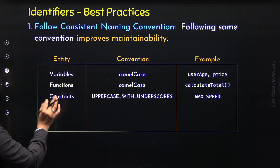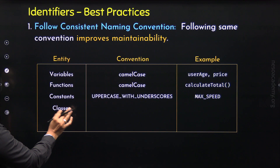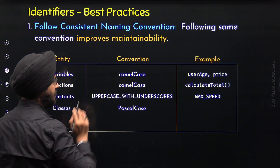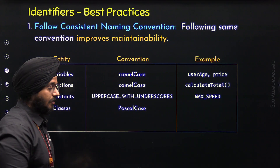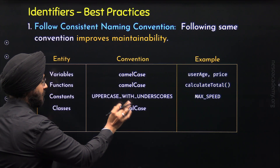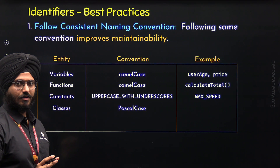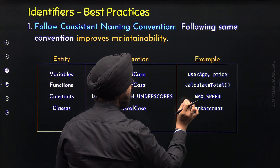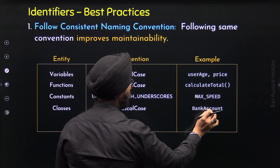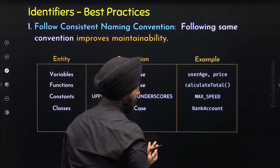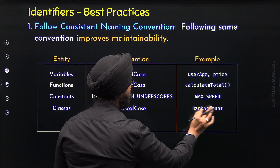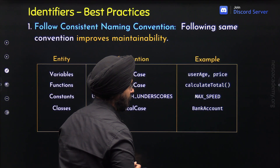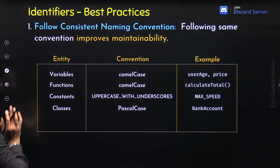Now let's move to the fourth entity: classes. Classes follow the Pascal case convention, where the first letter of each word is capitalized. For example, here we have the name BankAccount, which is formed from two words, Bank and Account. The first letter of each of these two words is capitalized.